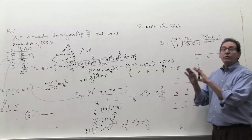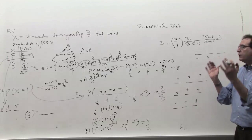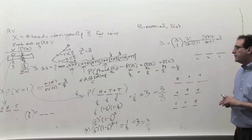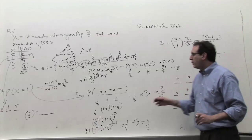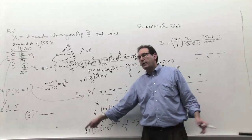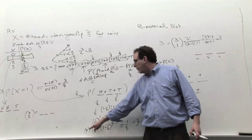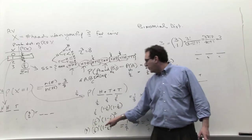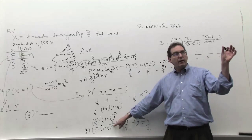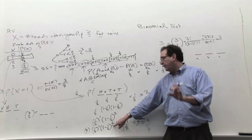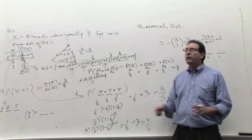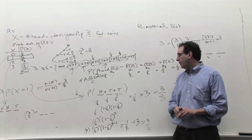If you understood to a large extent how this formula developed, we should be able to generalize this to any problem. The formula requires you to plug in three numbers. How many coins you have — three coins, four coins, five coins — that n goes here, and the three also goes over here because when you're trying to figure out how many tails you're going to get, you take the number of coins minus the number of heads. So n appears twice in the formula.